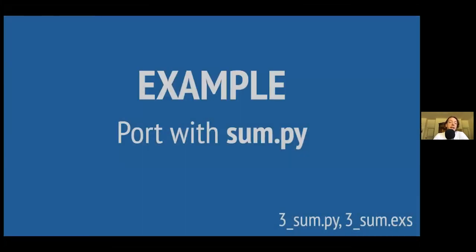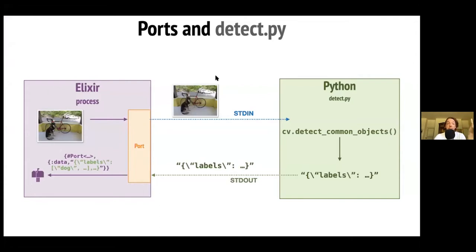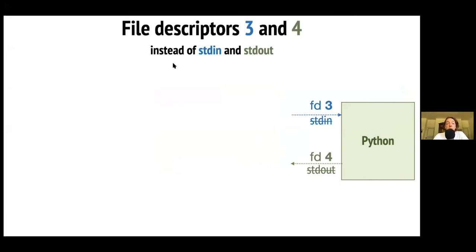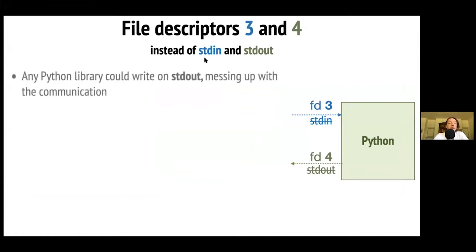For the detect script, instead of using standard input and output, we use file descriptors 3 and 4. The reason is that any Python library could write to standard output, which would mess up communication. Using different file descriptors, we can still use stdout and stderr for debug messages. In Elixir, we just add the option when opening the port. In Python, we open file descriptor 3 in read binary mode for input, and 4 in write binary mode for output.